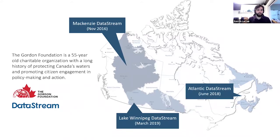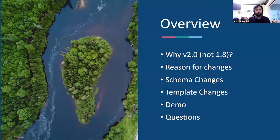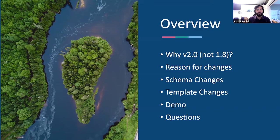We started DataStream in 2016 with McKenzie DataStream and have since expanded into the Atlantic region in 2018 and Lake Winnipeg in 2019. Today we're going to go over why the version jumped to 2.0 (not 1.8, as the last version was 1.7), the reasons for these changes, schema changes to allowed values and columns, template changes to the physical upload template, then a quick demo and Q&A.